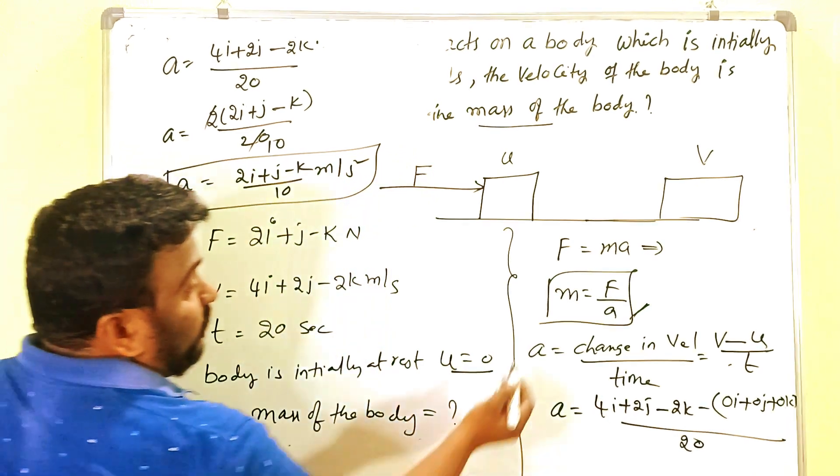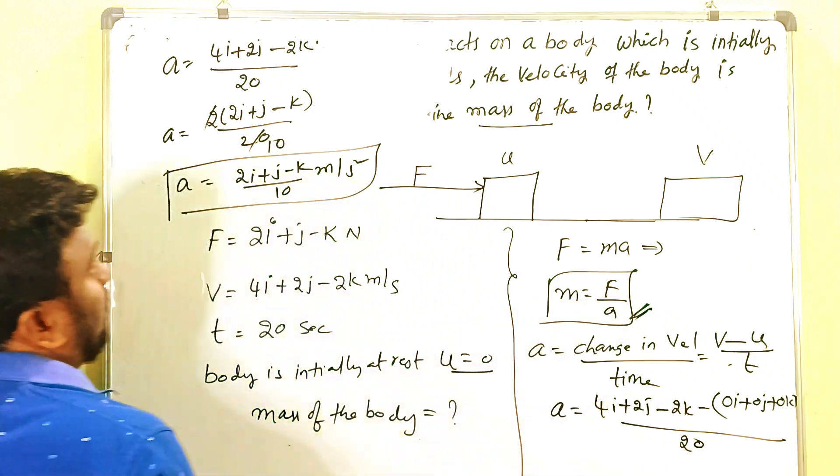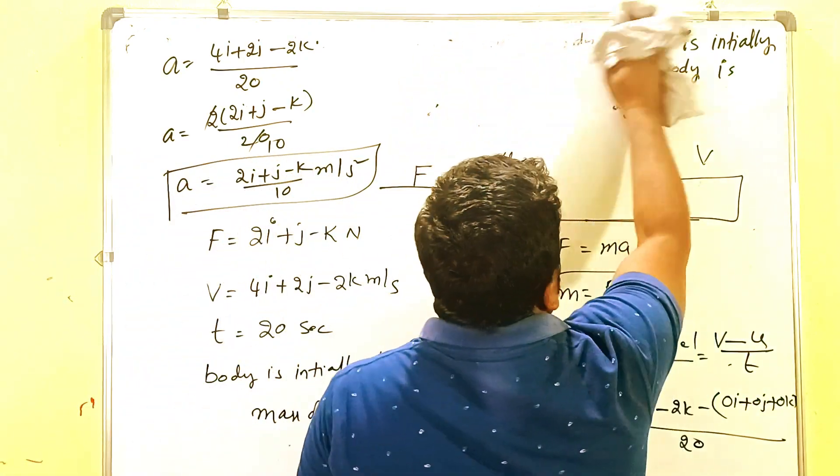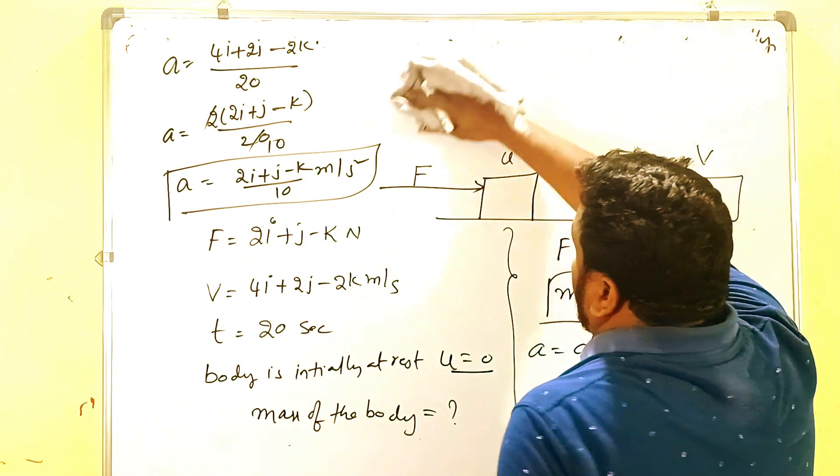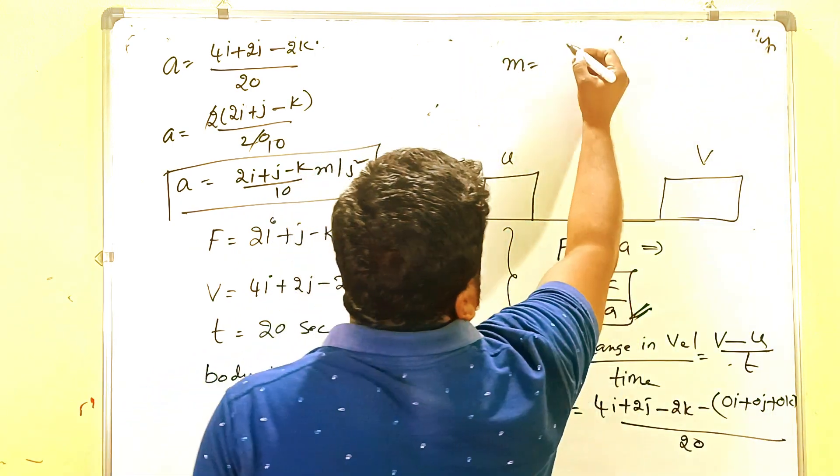Now what we have to find out is the mass of the given body by using the formula F by A. We just derived the value for A. So M equals F by A. F is this one.